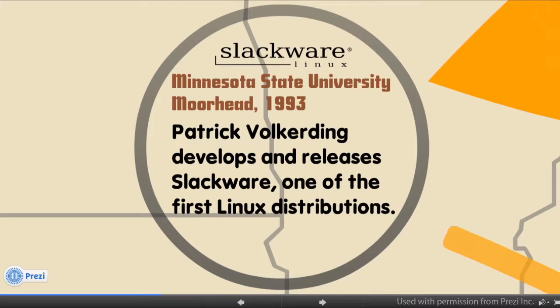Fast forward a couple of years to 1993 at Minnesota State University in Moorhead. Patrick Volkerding developed and released Slackware, which is one of the first Linux distributions. A Linux distribution is a package of software that makes an operating system. Linux itself is just a kernel, just the core of the system that manages the hardware and the scheduling and the things that we talked about in one of the last sections.